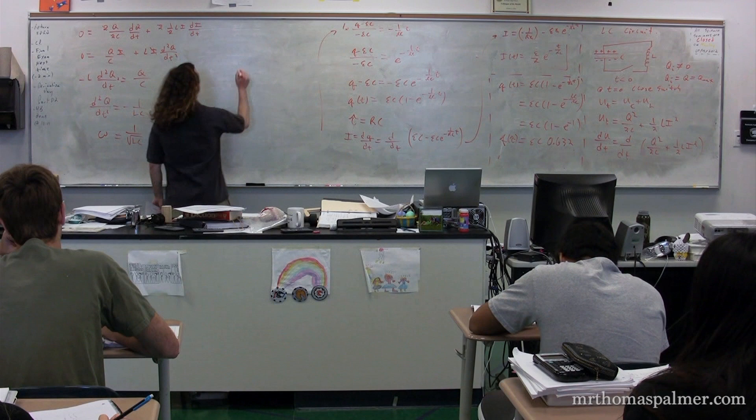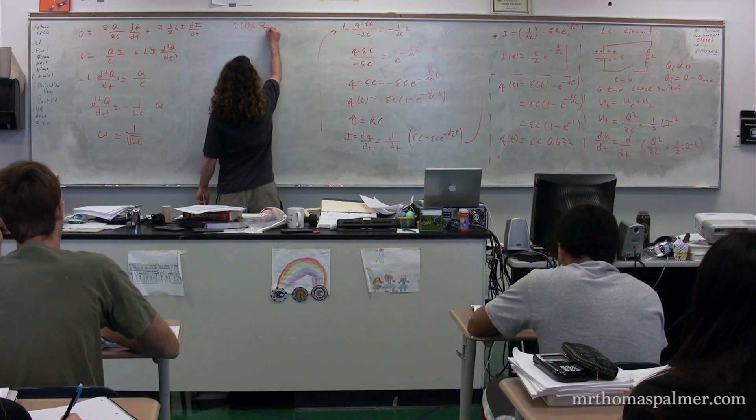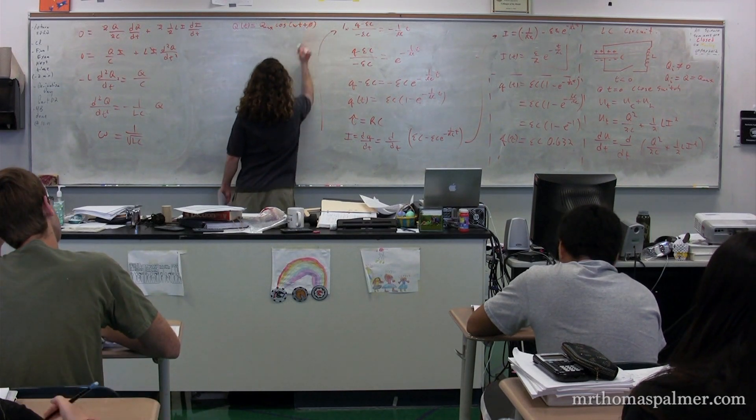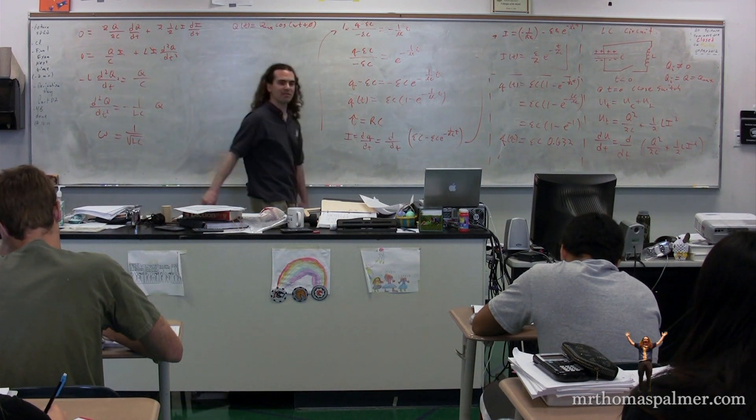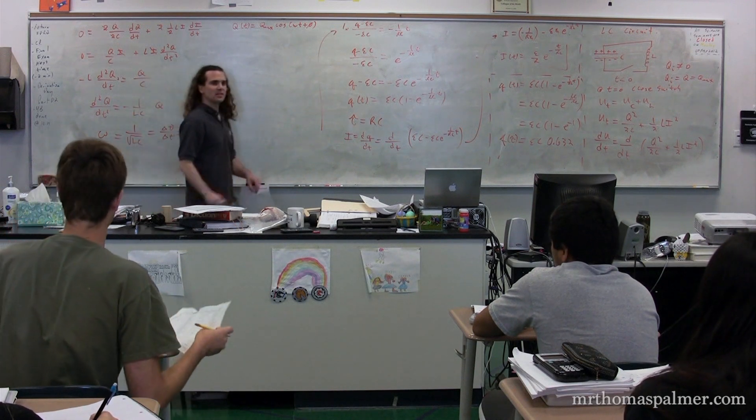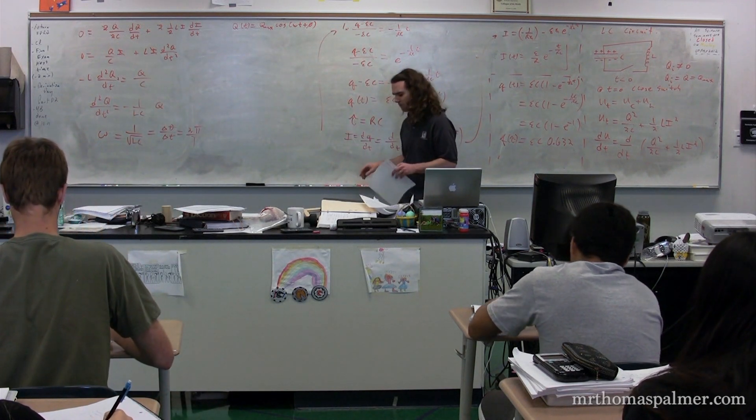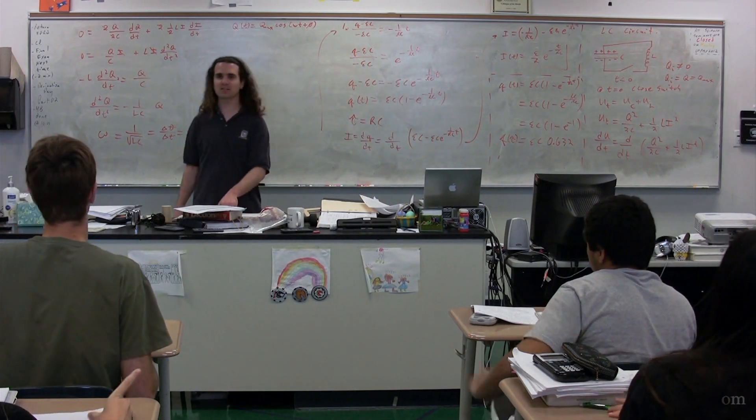Therefore, we have several things. Charge as a function of time is going to be equal to the charge maximum times the cosine of omega t plus phi, where omega is 1 over the square root of LC. We can take the derivative of that to get the current. We can also say that that's equal to the angular frequency, equal to 2 pi over the period. Therefore, you can solve for the period. Ladies and gentlemen, I look forward to seeing you two minutes before next time.